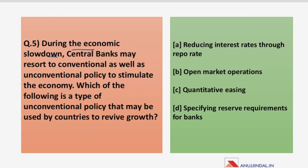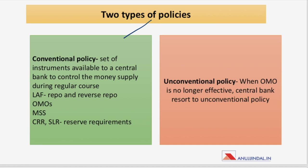The fifth and last question: during economic slowdown, central banks may resort to conventional as well as unconventional policies to stimulate the economy. Which of the following is a type of unconventional policy that may be used to revive growth? Before looking at the options, let us understand what conventional and unconventional policies mean. Conventional policy is a set of instruments available to a central bank to control the money supply during the regular course.